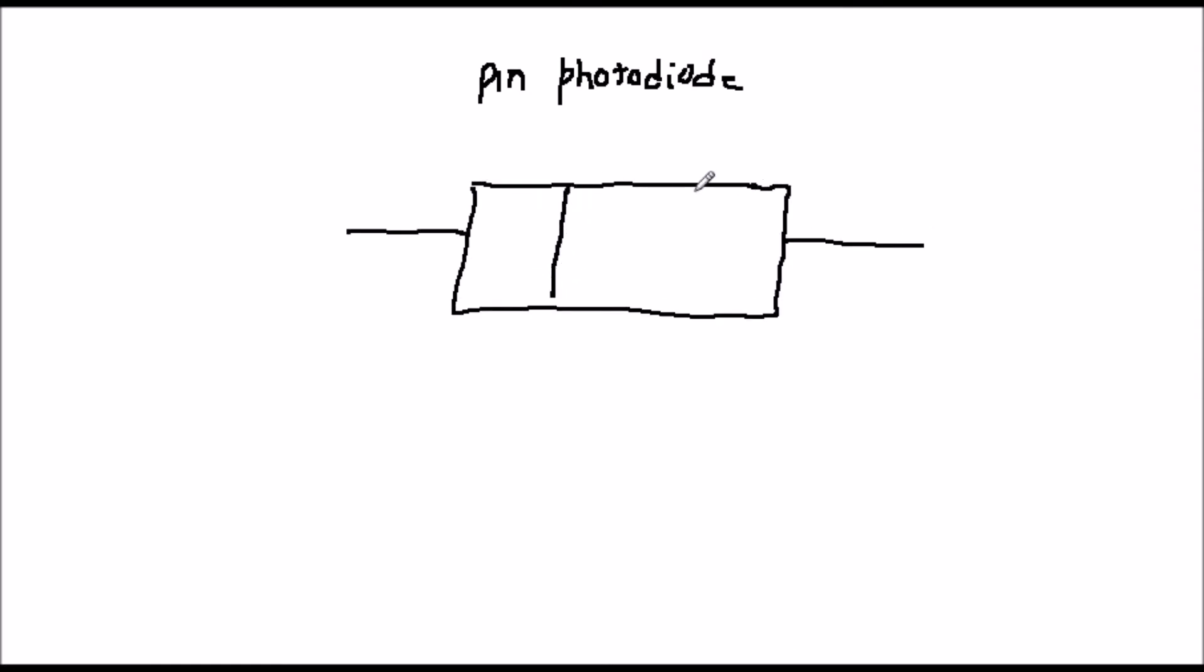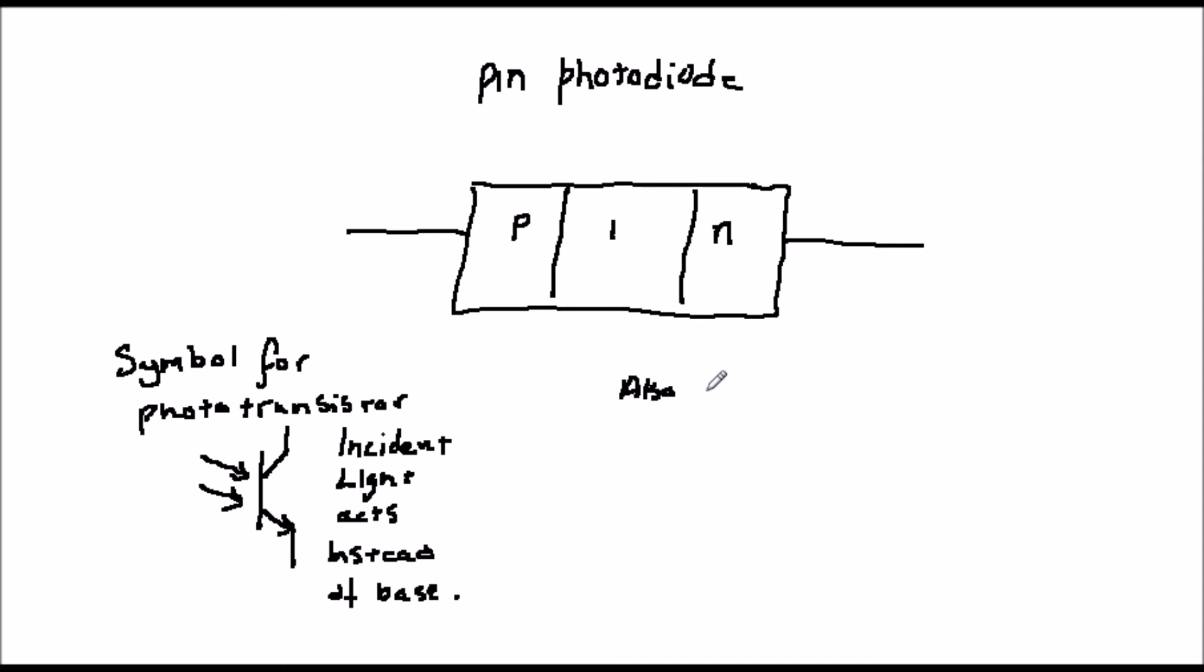One of these is a modified version of a normal photodiode called the PIN photodiode. In this device, an undoped or intrinsic layer of silicon is sandwiched between the P and N regions. This effectively acts like an enlarged depletion region, and you might remember that it is in the depletion region that the photons are absorbed. This has the effect of performing better at long wavelengths of light, so PIN diodes work better with those than ordinary diodes.